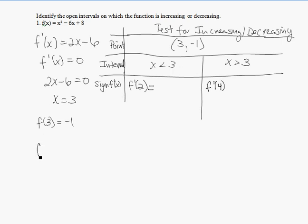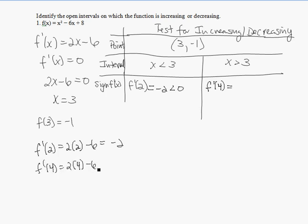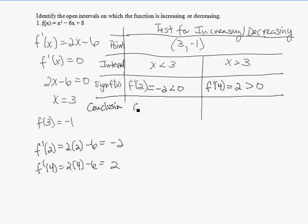So f prime of 2, plugging into our derivative, gives 2 times 2 minus 6, which equals negative 2, which is less than 0. And f prime of 4 gives 2 times 4 minus 6, which is positive 2, which is greater than 0. So the function is decreasing on the left interval and increasing on the right interval.